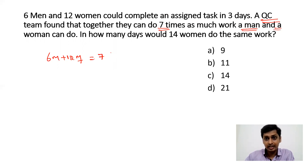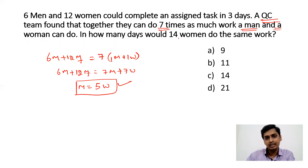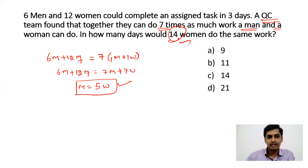So 6 men and 12 women can do 7 times the work that 1 man and 1 woman do. So 6 men + 12 women is equivalent to 7 men + 7 women. Therefore 1 man's work equals 12 − 7 = 5 women's work. So 1 man is equivalent to 5 women.